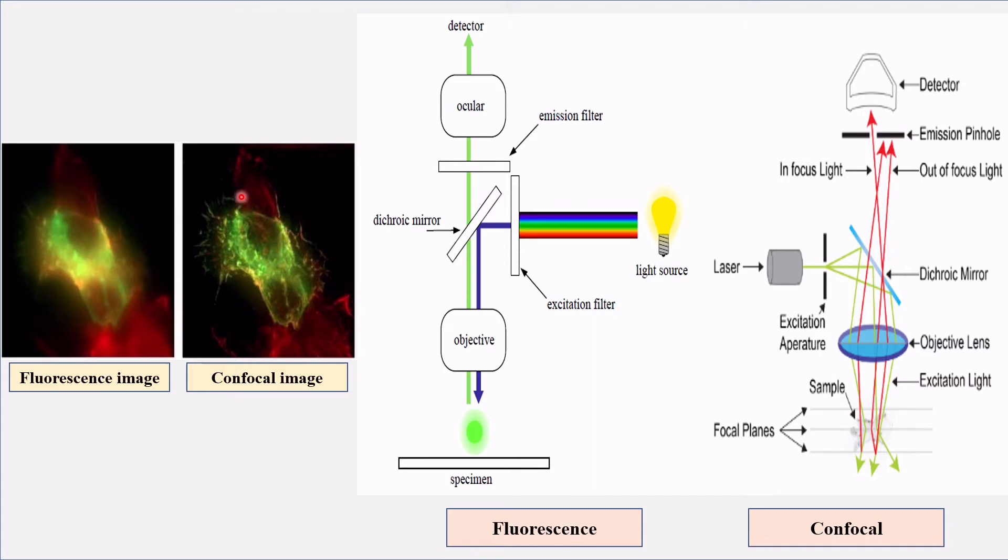It also gives a 3D pattern. Confocal microscope is nothing but an advanced fluorescence microscope. Then what is the difference? It is a pinhole that makes confocal unique over traditional fluorescence microscope.